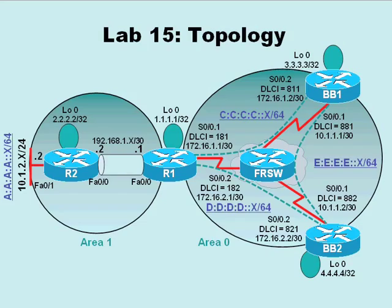We will go into the tunnel interfaces and add IPv6 addressing — for example, the tunnel interface on router R2 will have an IPv6 address of B:B:B:B::2/64. We will also configure these interfaces to participate in the router's existing OSPF version 3 routing process. Even though the link between R1 and R2 is really an IPv4 link, we are encapsulating IPv6 traffic inside an IPv4 tunnel packet.